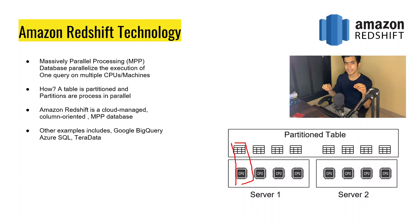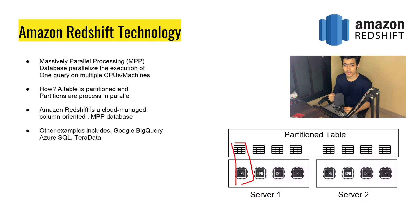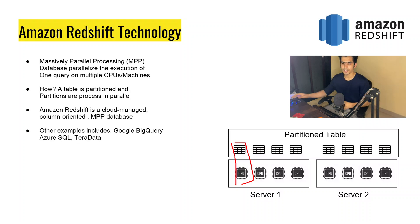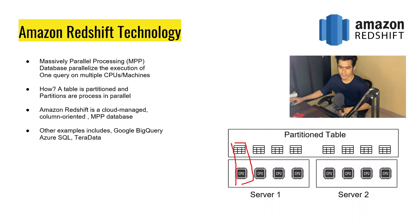Relational databases store everything in single rows — every row you write is stored exactly as that row. But Redshift stores everything in column format. We'll look at columnar storage in detail in the next slide. Other examples of columnar data stores include Google BigQuery, Azure SQL, Teradata, and others.